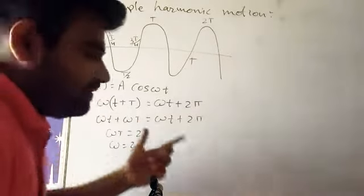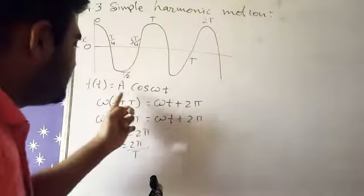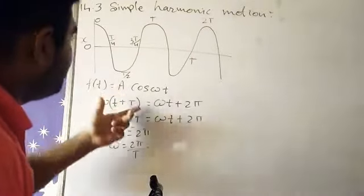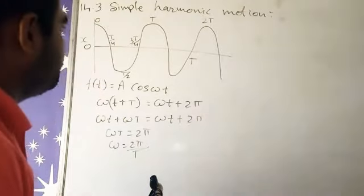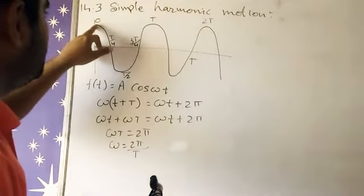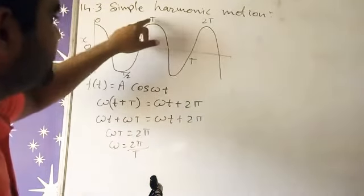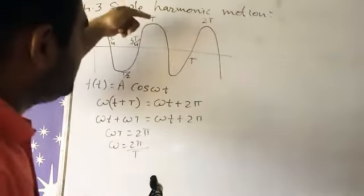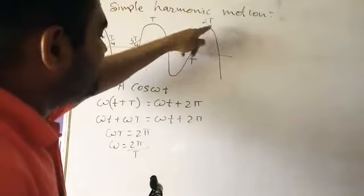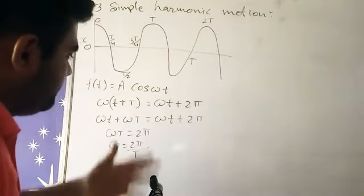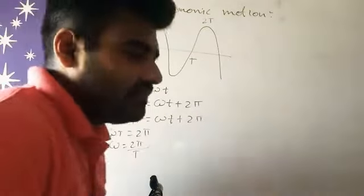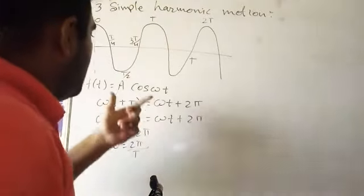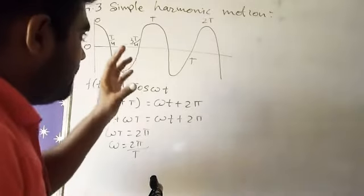See, whenever we are adding periodic time to the previous time, displacement will remain constant. For example, at zero, if I am adding T, displacement constant here, constant here. Again I am adding T to this value to 2T, displacement constant. So always by adding this periodic time, displacement always remains constant.